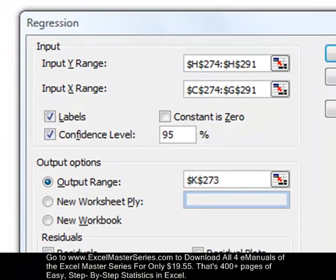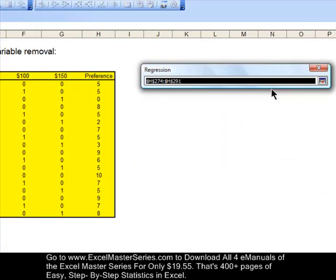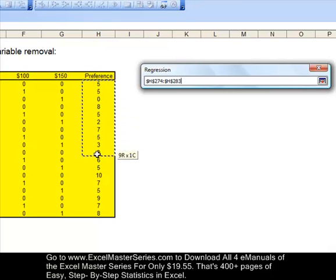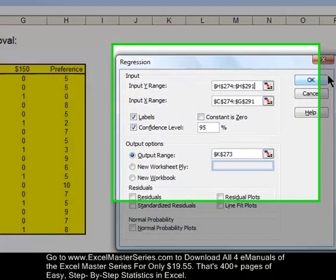The first piece of data we need to input is the Y range. That's the dependent variable range. Click that little square there and go over and select the dependent variable data. That would be everything in the Preferences column. Don't select the label preferences, just the data. Hit that square and go back to the main dialog box.